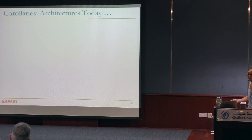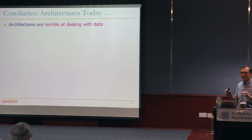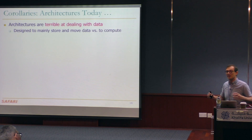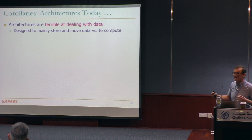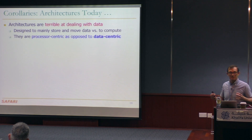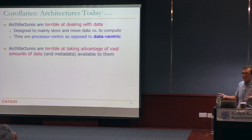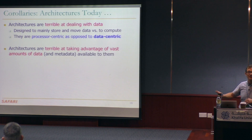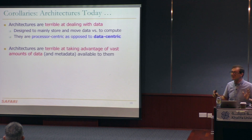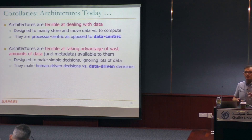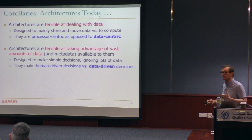I'll deconstruct current architectures in three ways. First, architectures today are terrible at dealing with data. They're designed to mainly store and move data versus compute. They're called computing architectures but not doing computing most of the time. This is because they're processor-centric — their paradigm is processor-centric design as opposed to data-centric design. Second, architectures today are terrible at taking advantage of vast amounts of data available to them over years and years — even over microseconds. They're designed to make simple decisions, ignoring lots of data, because they make human-driven decisions as opposed to data-driven decisions.